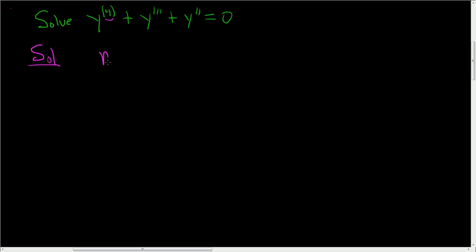That's a 4. So here we put m to the 4. That's the fourth derivative. Plus this is the third derivative, so here we have m cubed. Plus this is the second derivative, so here we have m squared. And we set this equal to 0.